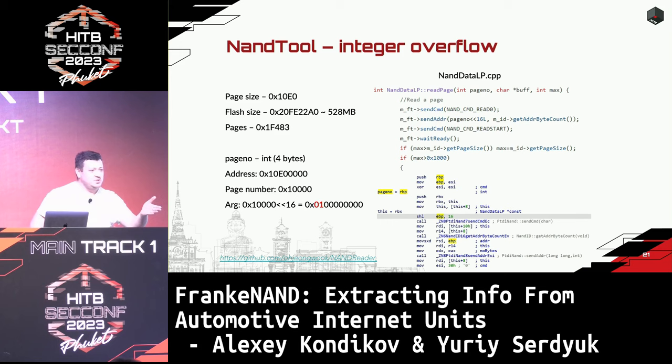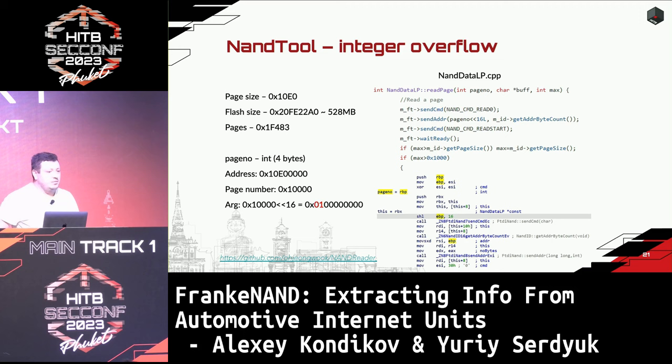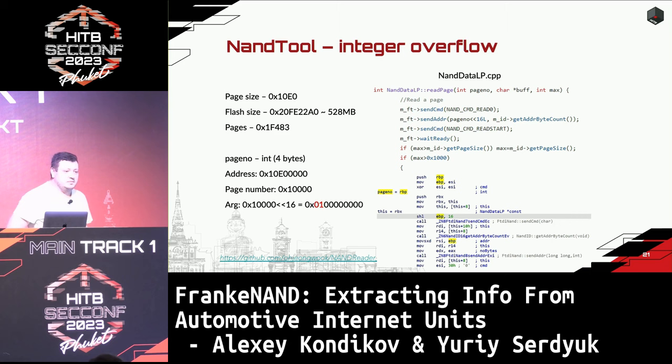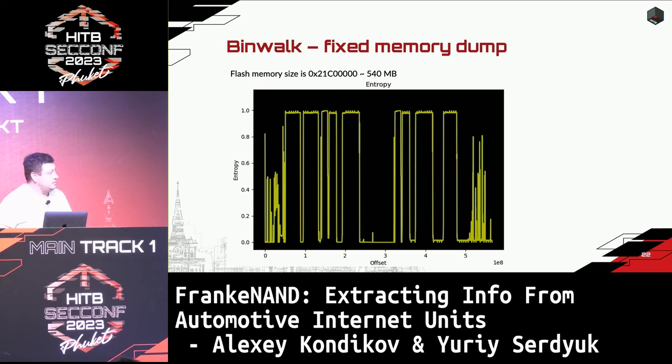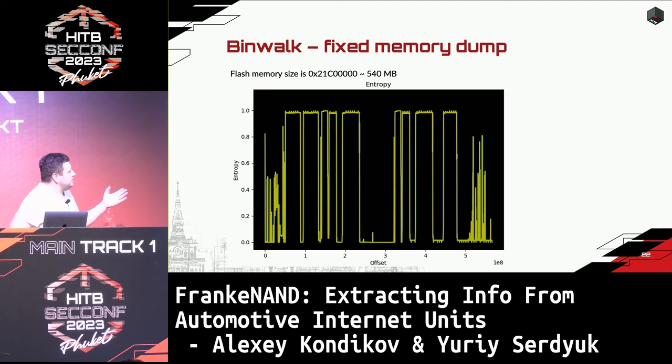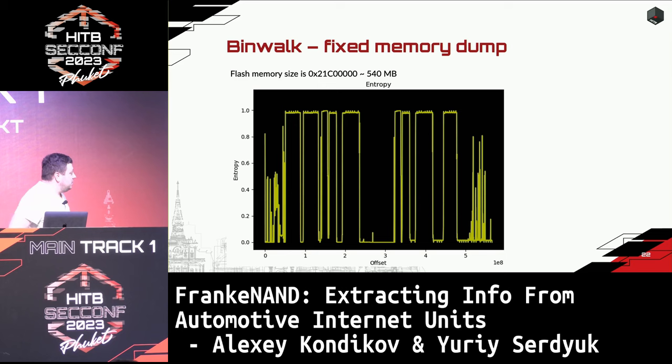We fixed the tool and re-read data from the NAND chip again. The entropy picture received with binwalk is now different from before — it has some backup partition, but almost everything else is different. Again we tried to extract the SquashFS file system and mount it, but the tool said the file system is corrupted.